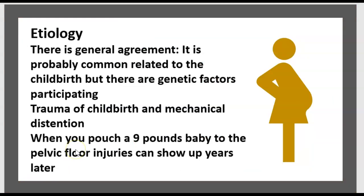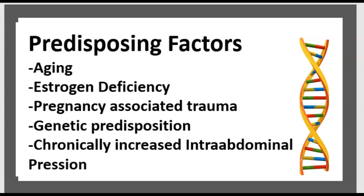Etiology: there is general agreement that pelvic organ prolapse is probably commonly related to childbirth, but genetic factors also participate. Trauma of childbirth and mechanical distension — when you push a nine-pound baby through the pelvic floor, injury can show up a year later. Predisposing factors include aging, estrogen deficiency, pregnancy-associated trauma, genetic predisposition, and chronically increased intra-abdominal pressure.